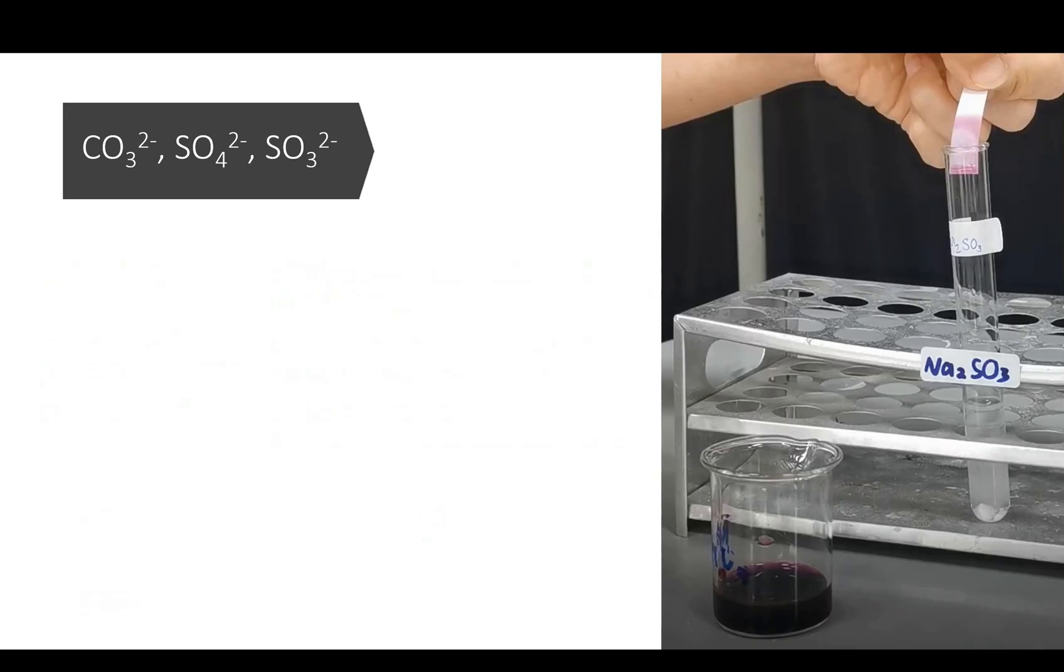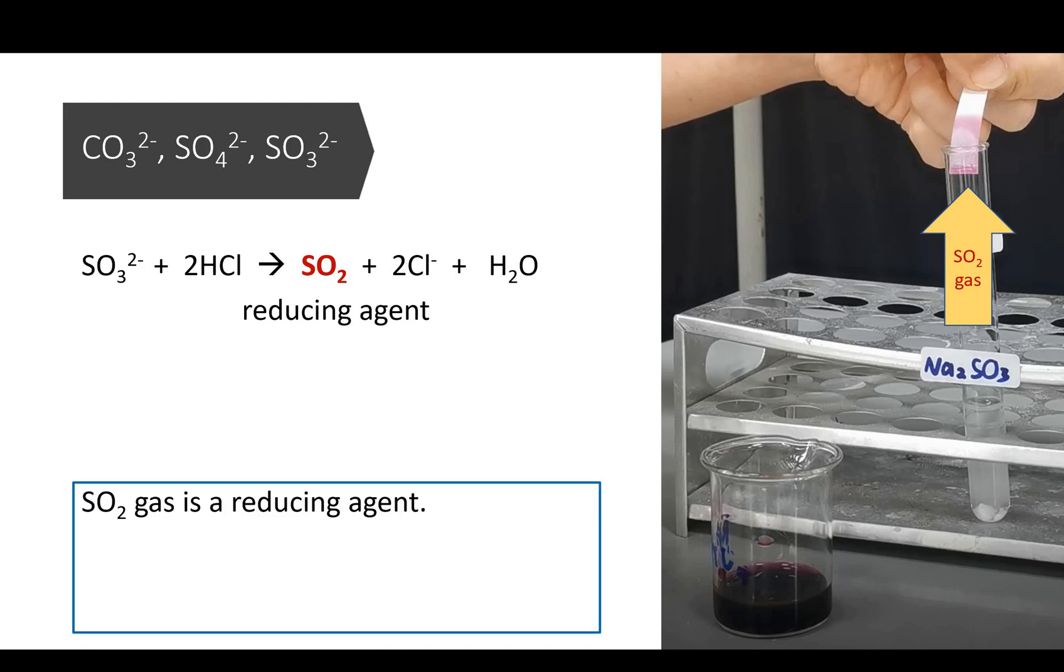So, for a more specific test for sulfite ion, we can add hydrochloric acid to sulfite. This reaction produces sulfur dioxide gas. Sulfur dioxide can be oxidized to sulfur trioxide, so it acts as a reducing agent. And remember the test for a reducing agent? It's acidified potassium manganate 7, but this time, instead of testing the solution, we test the gas.